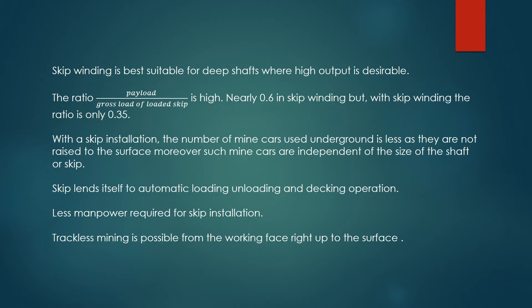Nearly 0.6 in skip winding, but with cage winding the ratio is only 0.35.